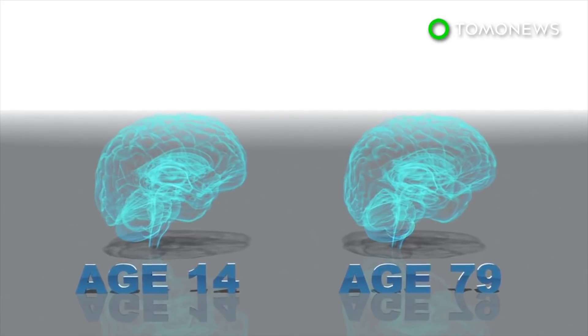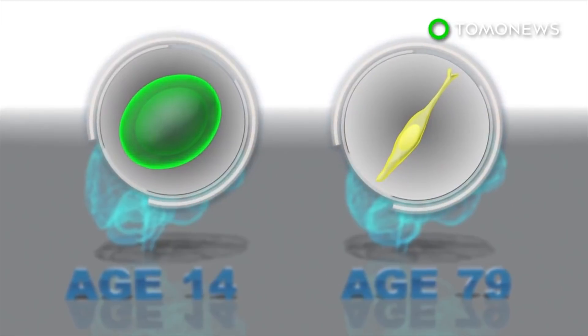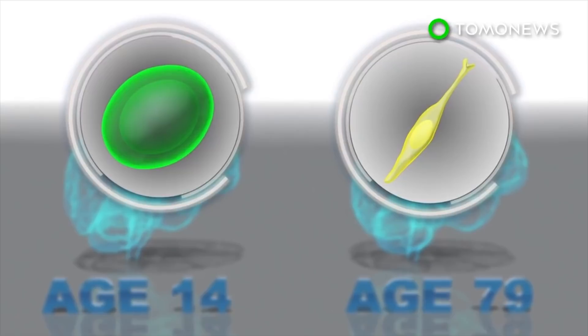Researchers found similar numbers of neuroprogenitor cells and immature neurons, regardless of age. This led them to conclude that human brain can produce neurons even in old age.